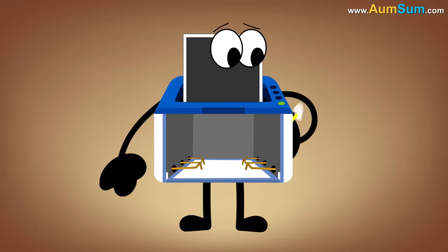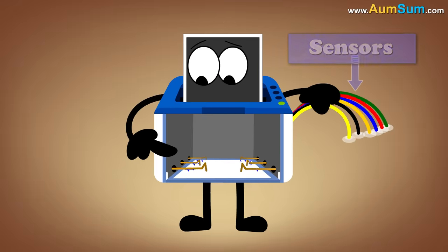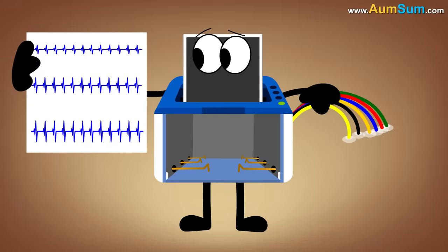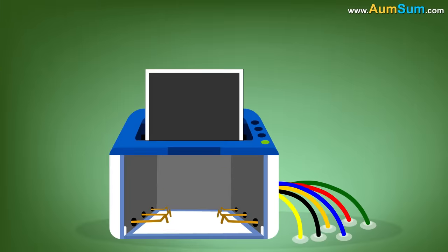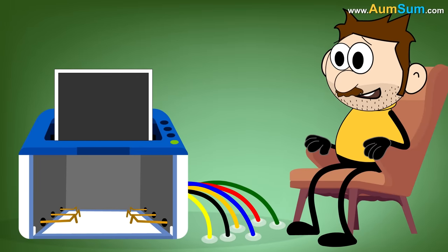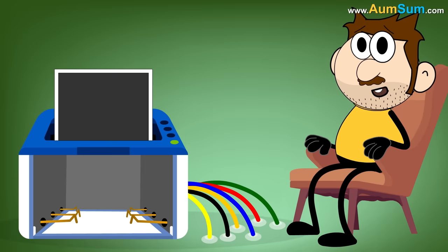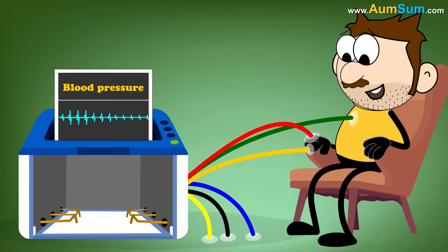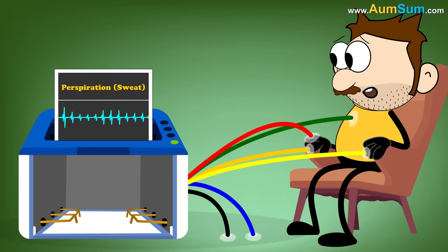A polygraph machine consists of multiple sensors whose response is recorded in the form of a graph on a single strip of paper. These sensors are attached to the person taking the lie detector test. These sensors usually record the person's breathing rate, pulse, blood pressure and perspiration.